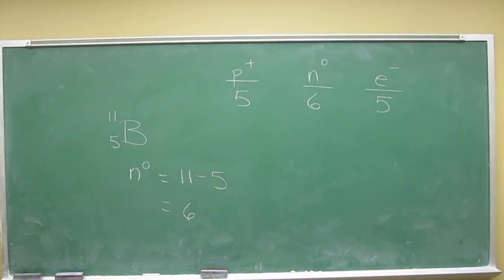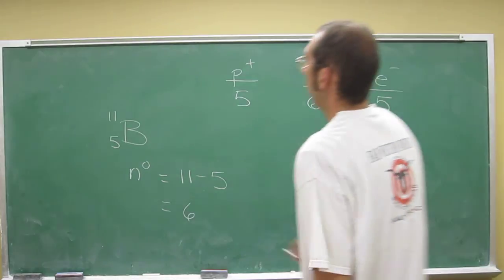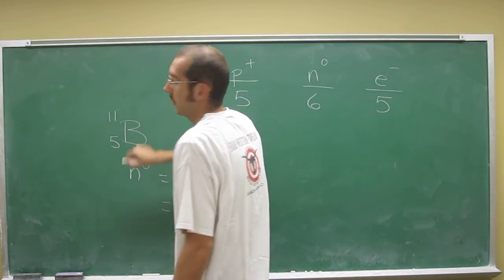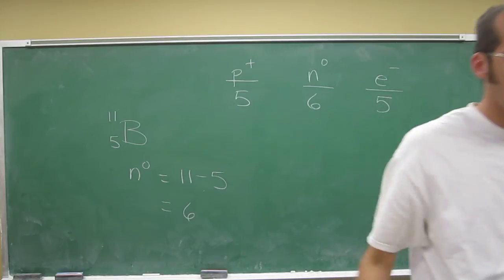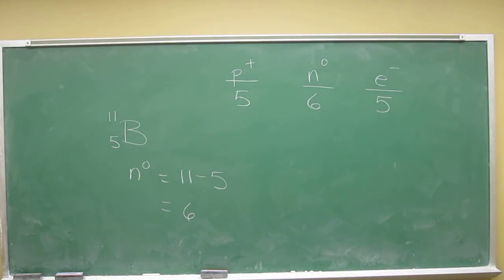this is an isotope of boron. So this mass number refers to the mass of this particular boron atom, not all the boron atoms in the universe. Okay.